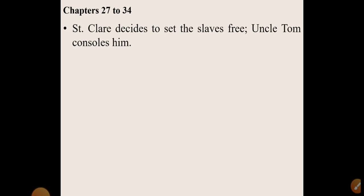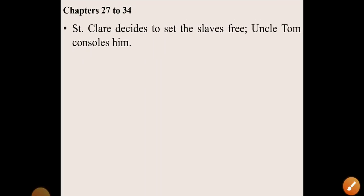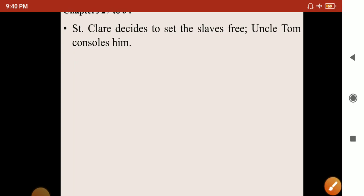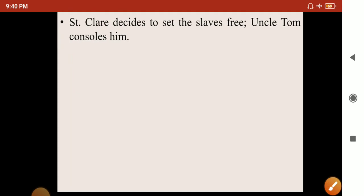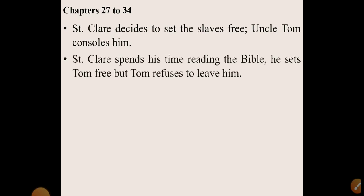In chapters 27 to 34, the plot moves further. Augustine St. Clare is very sad having lost his daughter and decides to set the slaves free, as it was his daughter's dying wish. Uncle Tom again behaves like a companion and friend to St. Clare, trying to console him. St. Clare sets Tom free, but Tom refuses to leave him — showing the deep bond between the two.